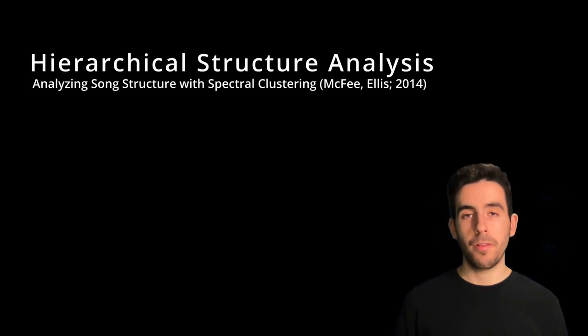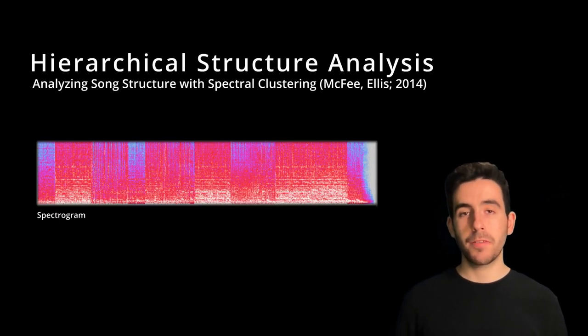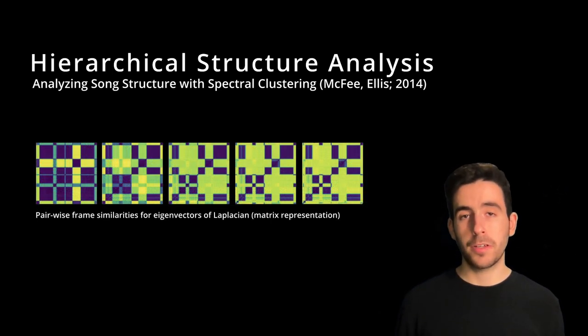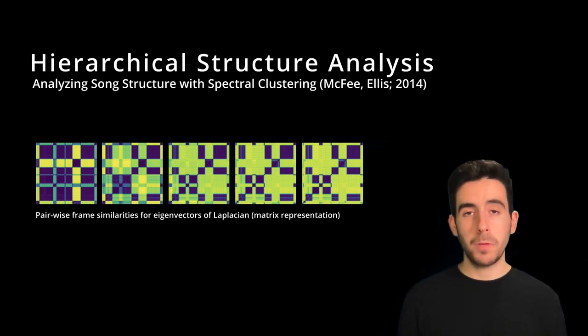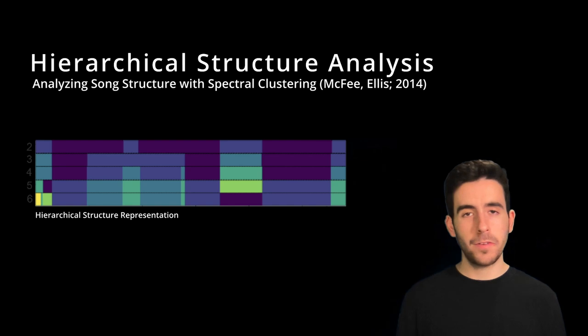For the hierarchical structure analysis method, I'm using the one by McFee and Ellis. In this method, you compute an affinity graph from a sequence of musical features, and then you shift it to its matrix representation. We then perform spectral clustering on this matrix. To create approximations of structure at different levels of granularity, each time we use a different number of clusters, which results in the amount of segment types that are produced.